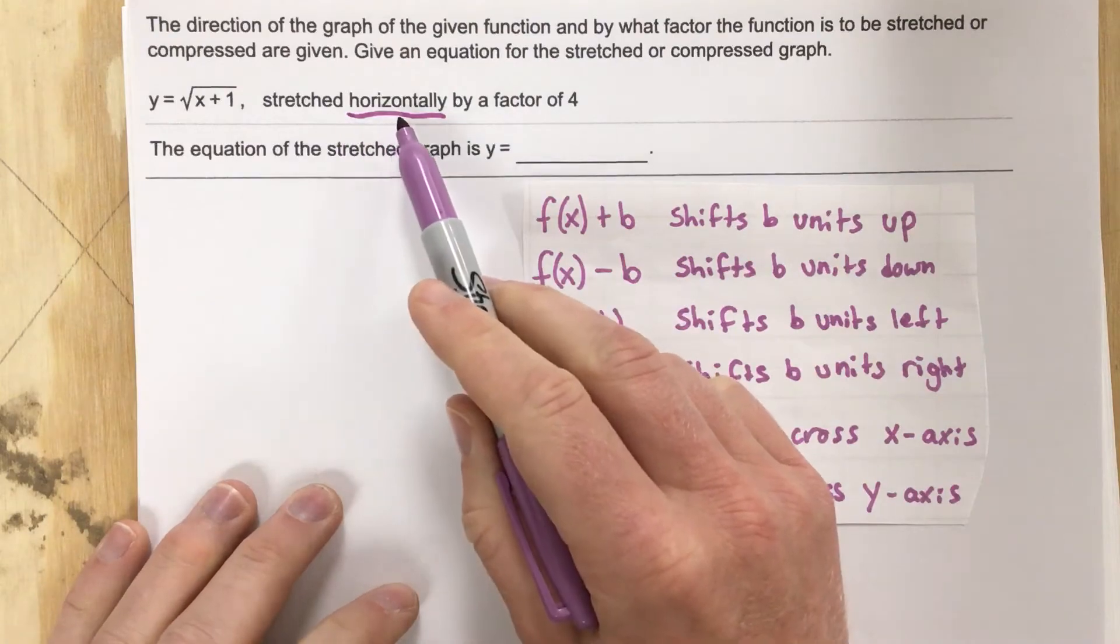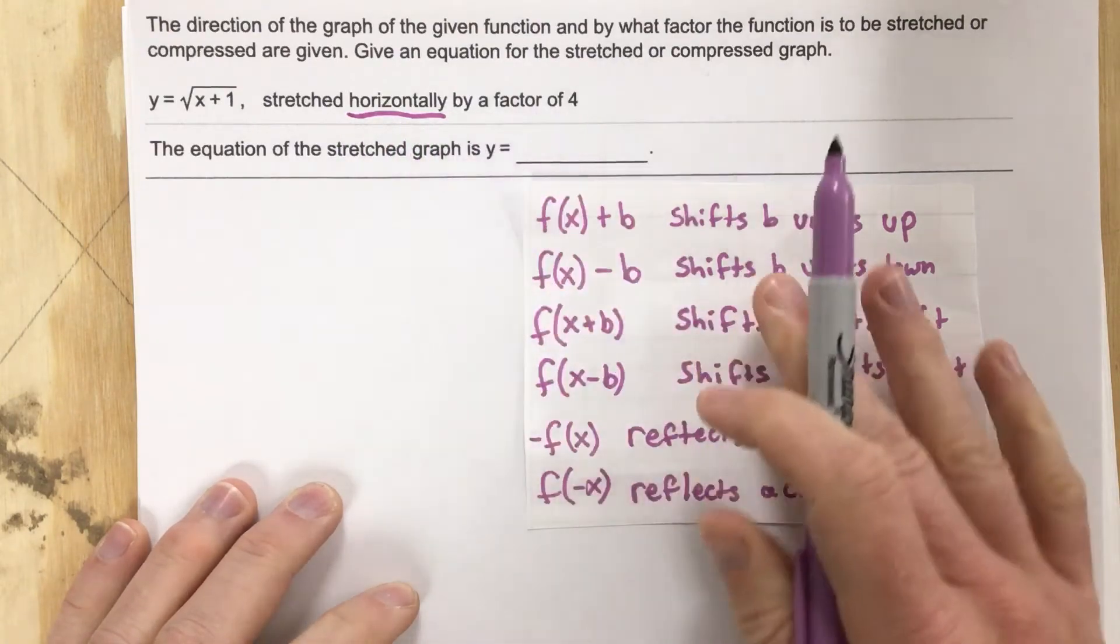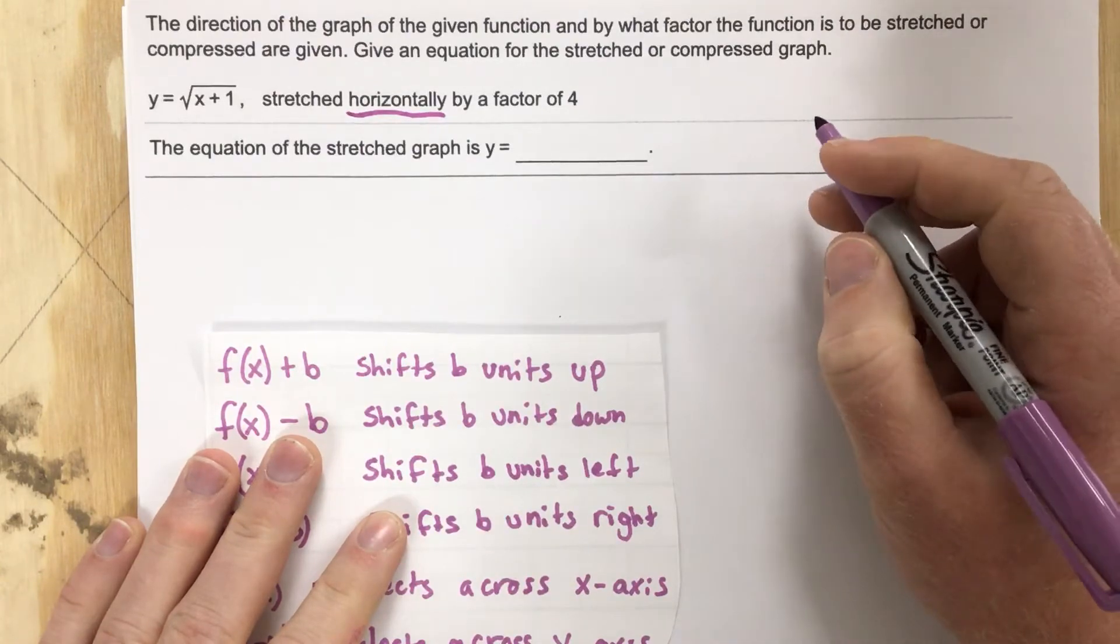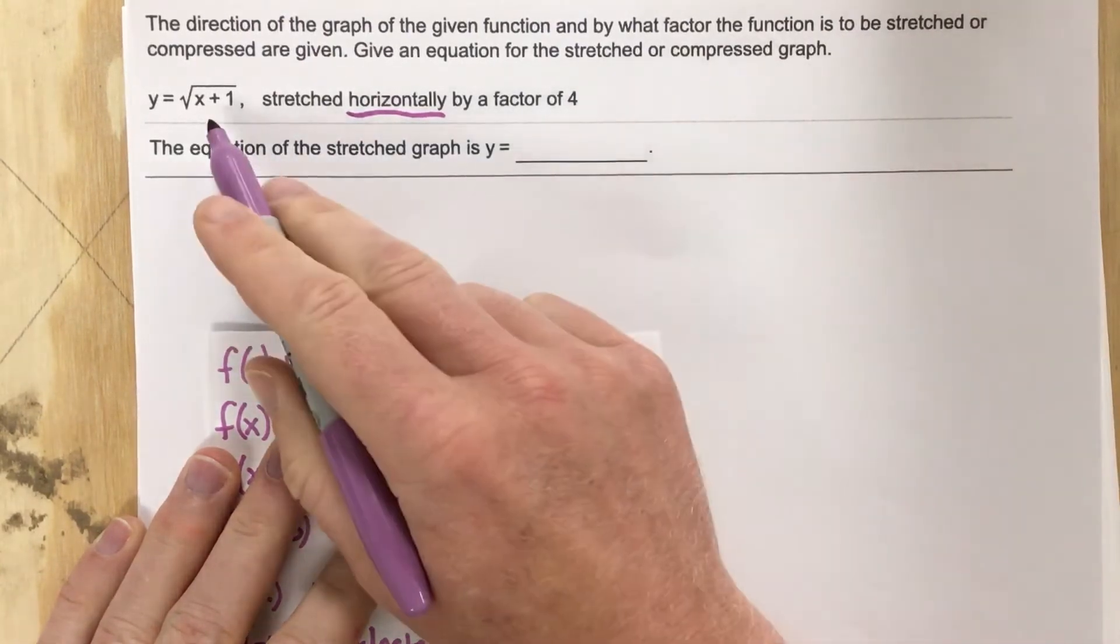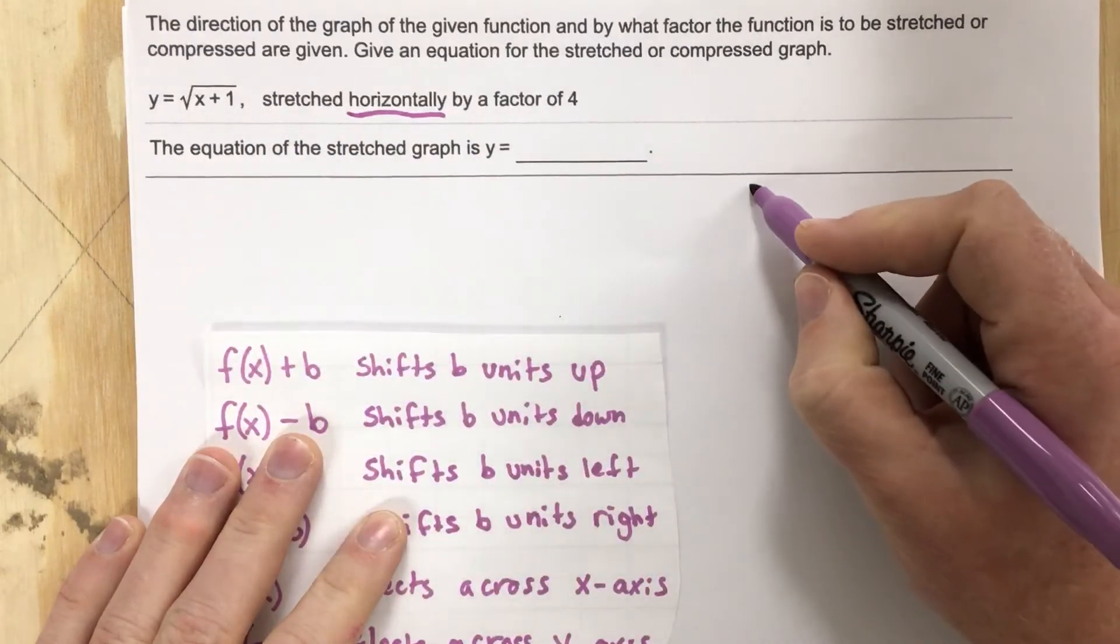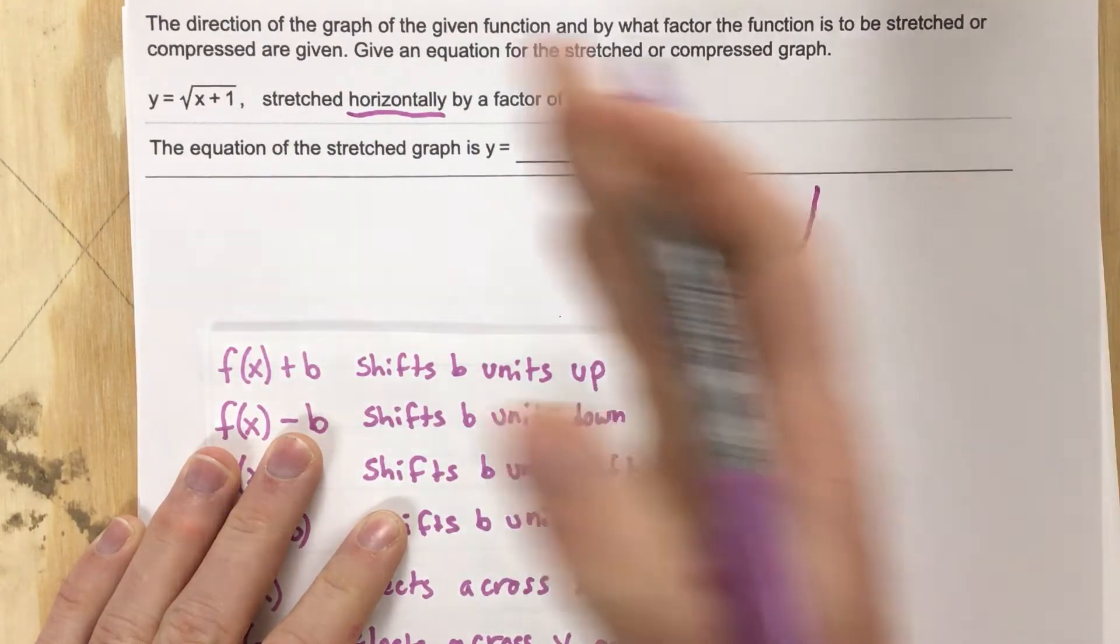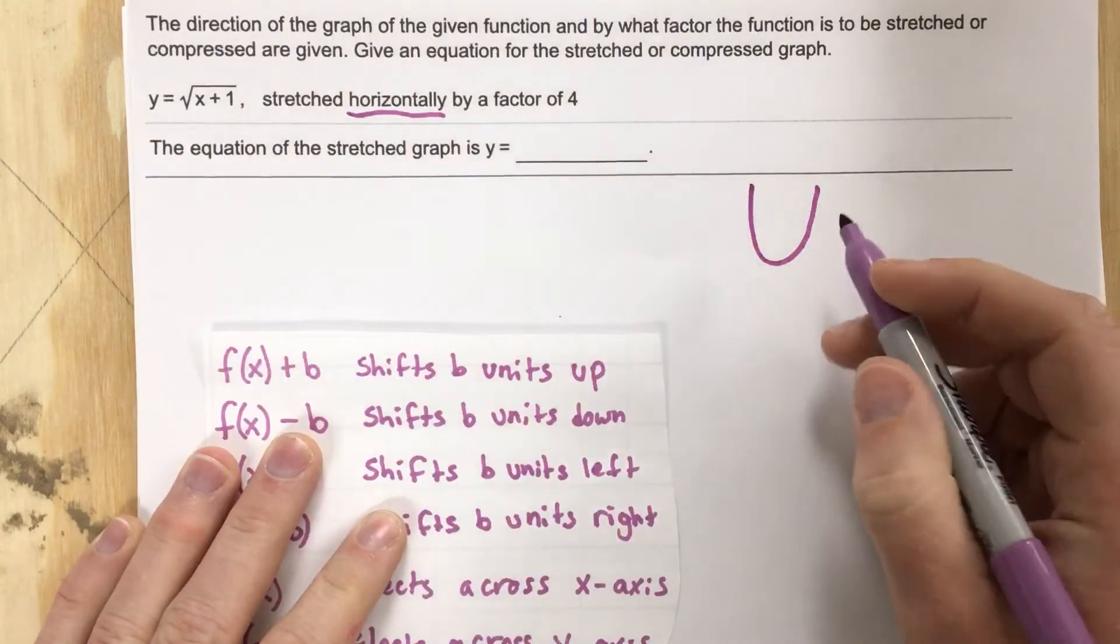So if I want to stretch horizontally by a factor of 4, let's talk about what that looks like. The easiest thing to, although this is a radical equation, we can think of stretching a parabola and then just apply that to a radical equation.